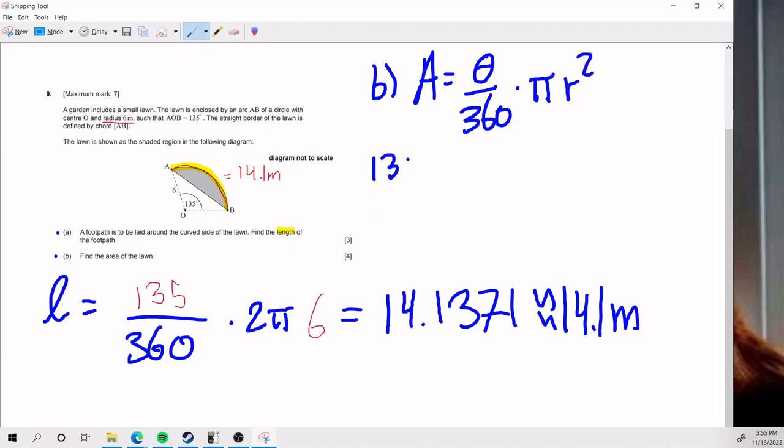And so if I plug everything in, much like earlier, we know that theta is 135, pi stays as pi, and r we said was 6. So this right now is what I put in blue earlier. It's all of this. What we want to do now is get the area of this triangle here and subtract it. So we're going to be subtracting by whatever that is.